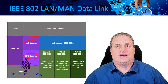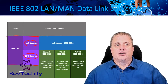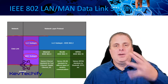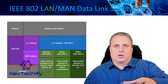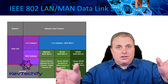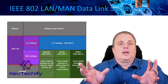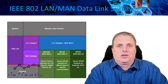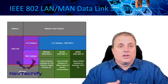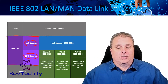The LLC sublayer also allows the software to communicate with the actual devices themselves — your network card inside your computer. The MAC sublayer is responsible for data encapsulation and media access control. That's where we put on the header and trailer to make our frame, and then we control access to the media — can you send now, or can you not send now.